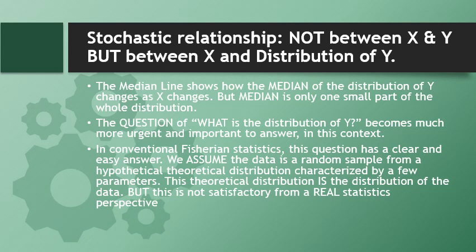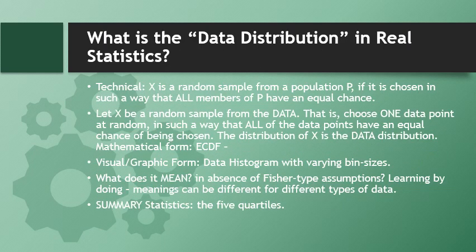From the point of view we are studying, we cannot arbitrarily assume data to have a distribution. A random sample from a population is an element chosen such that all members have an equal chance of being selected. For example, in the HIES data I have 15,509 households — if I choose one at random with equal probability, that is a random sample. Theoretically, the distribution of this random sample is the data distribution we work with in real statistics. A picture of this distribution is the data histogram.